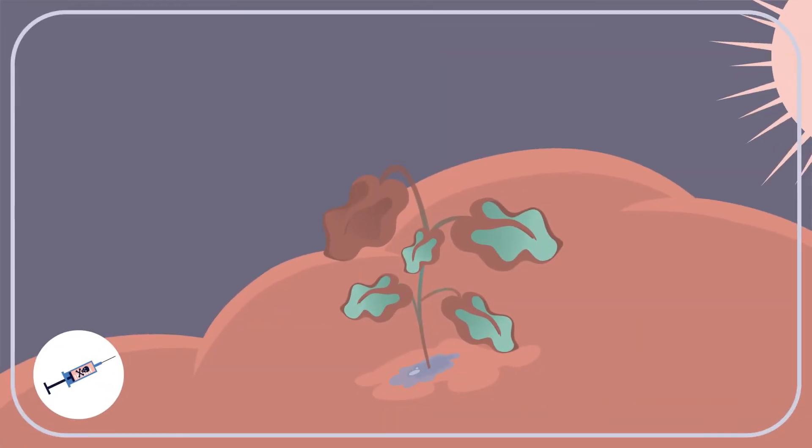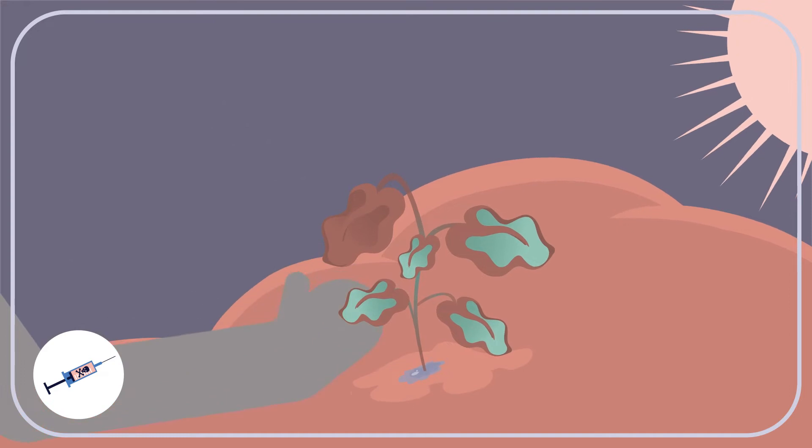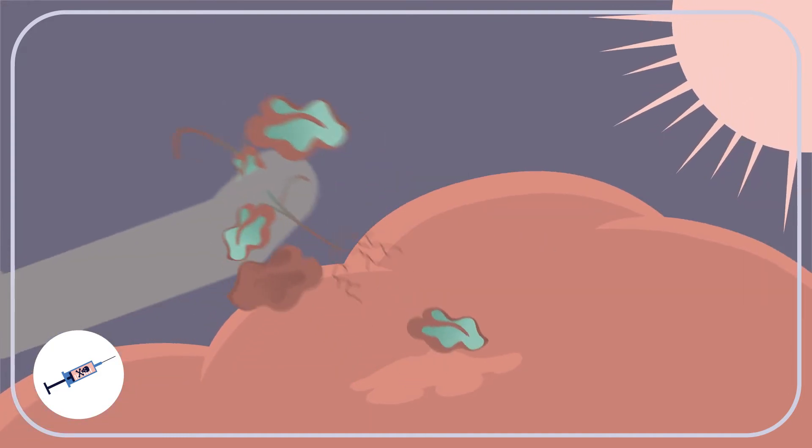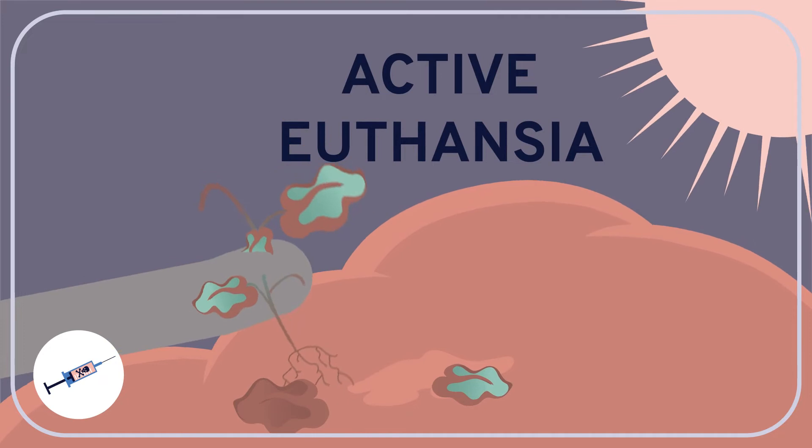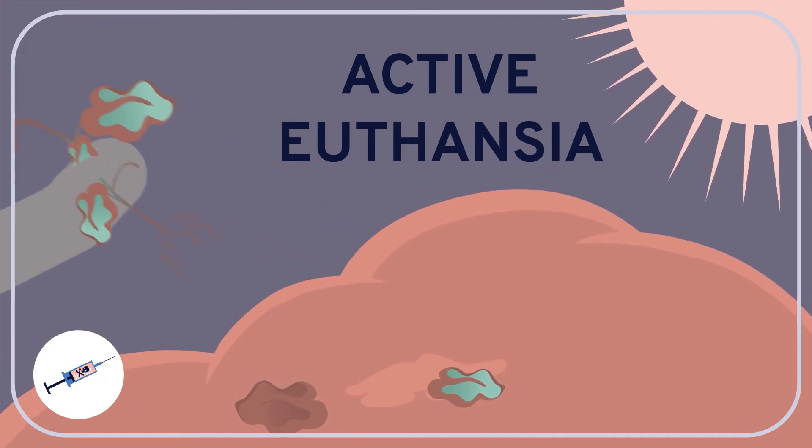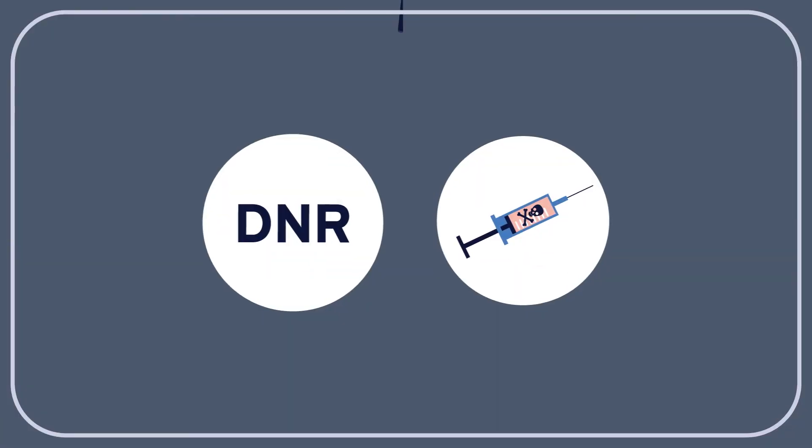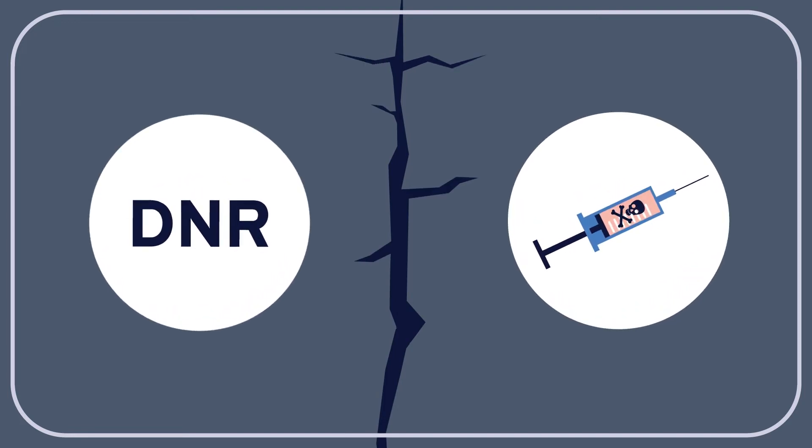On the other hand, if the provider injects a patient with a lethal drug, she is intervening to help him die. This is active euthanasia, in that she is actively killing him, and there is a clear ethical distinction between killing someone and simply letting them die.